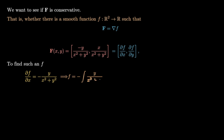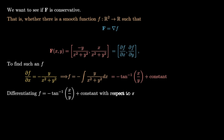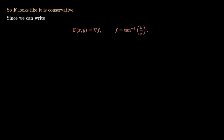Integrating both sides with respect to x, f equals minus the integral of y/(x²+y²) dx, which gives f = -arctan(x/y) plus some constant. Differentiating f = -arctan(x/y) with respect to y, we find the y-partial derivative equals x/(x²+y²), which matches the j-component. So it appears f is conservative, since we can write f as the gradient of f = arctan(y/x).